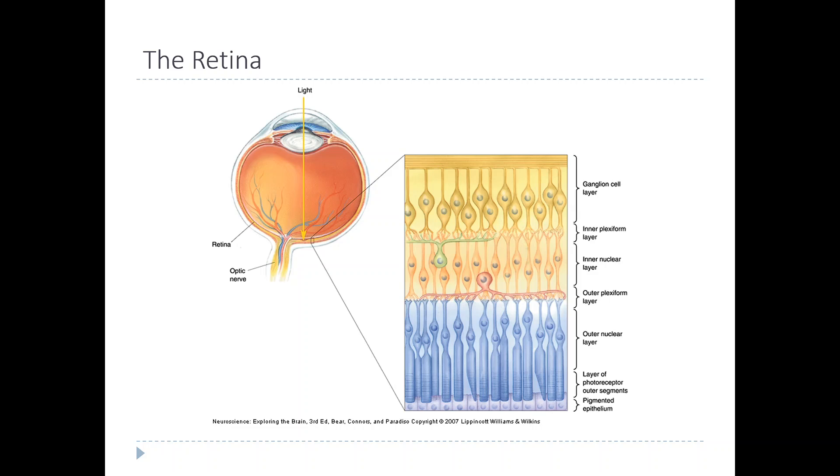It's made up of four layers of cells. The layer that is closest to the light path is the ganglion cell layer, and below that the inner nuclear layer, and then below that the outer nuclear layer, and then finally this pigmented epithelium forms the boundary with the sclera.